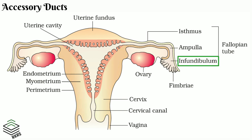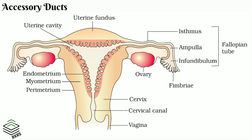The infundibulum is the funnel-shaped opening provided with many finger-like projections called fimbriae. It helps in the initial collection of the ovum. Next is a wider part called the ampulla. Finally, there is a narrow part called the isthmus, and it joins with the uterus.